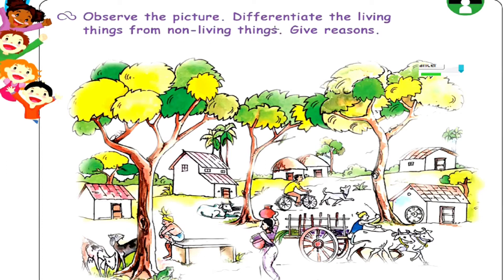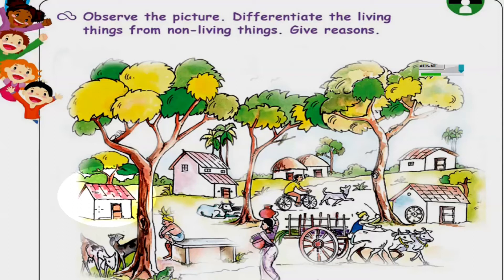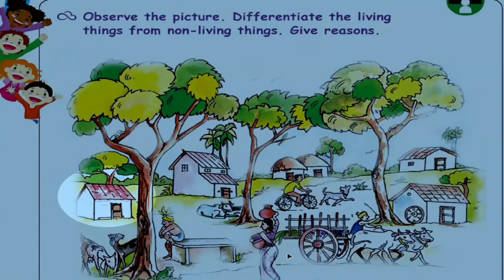Children, observe the picture. Differentiate the living things from non-living things. Look at the picture. What is this? Yes, this is a house. Does it grow? No, it will not grow. Does it breathe? No, it will not breathe. Does it move? No, it will not move from one place to another place. Does it produce young ones? No, it will not produce young ones.